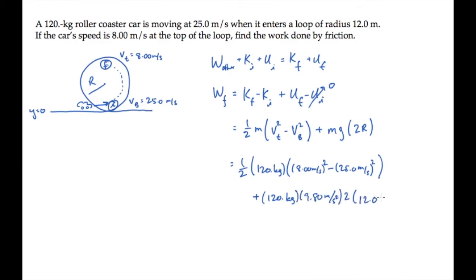And calculate to find that moving from the bottom to the top of the loop, friction does minus 5.44 kilojoules of work.